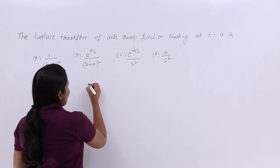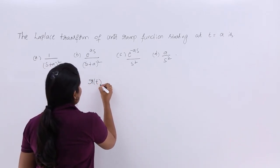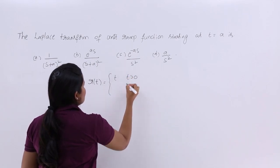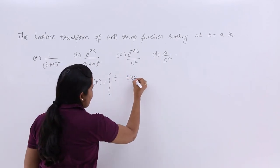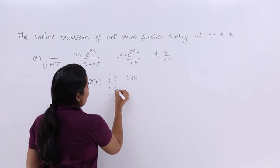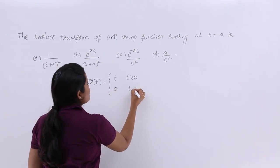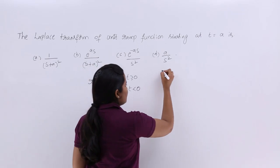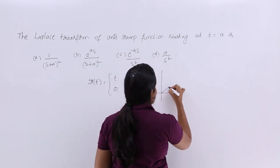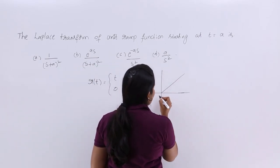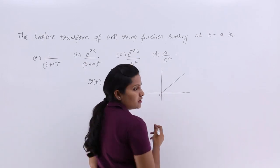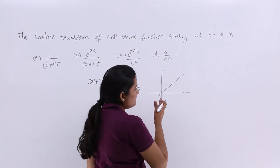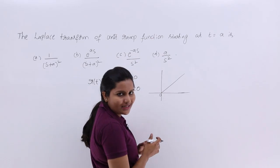Consider the unit ramp function R(T). R(T) is equivalent to T when T is greater than or equal to 0, and 0 when T is less than 0. This is the unit ramp function definition. The signal for the unit ramp will be linear — as time is increasing, the ramp is also going to increase linearly.